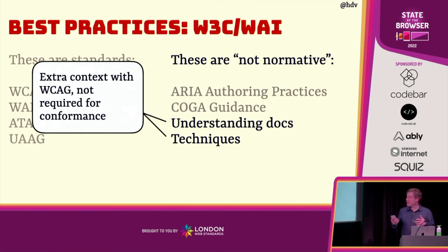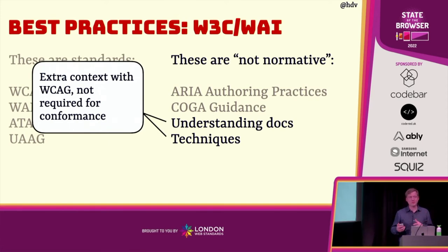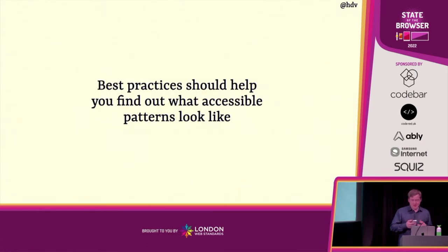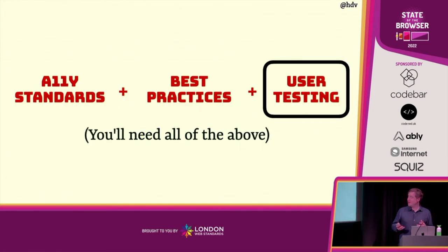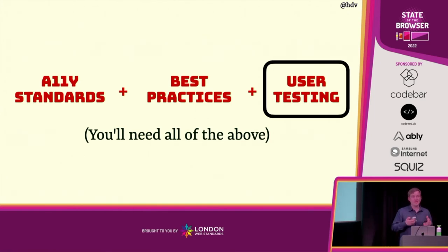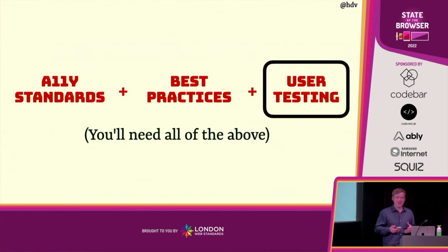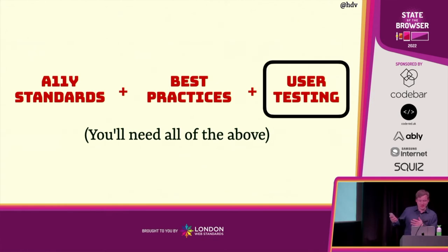The understanding documents and techniques that come with WCAG are very specific to WCAG — they're about how to use WCAG, not how to do accessibility in general. Obviously they're very much related, but it isn't the same. So in conclusion, best practices should help you find out what accessible patterns look like. Then the third facet is user testing. Once you've done all the WCAG auditing and followed the best practices, that's a really good time to go to user testing. There is kind of an implied order: start with standards, then look at best practices, then do user testing.